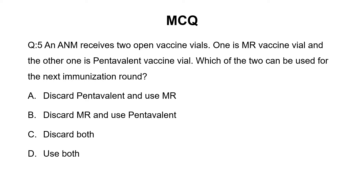So the question is: an ANM receives two open vaccine vials — one is an MR vaccine vial and the other one is a pentavalent vaccine vial. Which of the two can be used for the next immunization round? The options are: discard pentavalent and use MR; discard MR and use pentavalent; discard both; or use both.